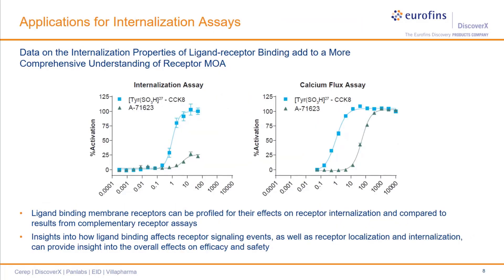I will now describe some of the applications for the PathHunter receptor internalization assays. Shown here is data from two different cell-based assays for the GPCR cholecystokinin A receptor. Two different ligands for the receptor were used in both assays, and data from each can be compared to better understand the overall effects of the ligand on the receptor. By combining knowledge of how ligand or compound binding affects receptor signaling events as well as receptor localization due to internalization, better insight can be gained into the overall ligand effects on efficacy and safety.